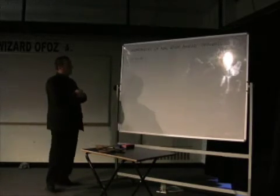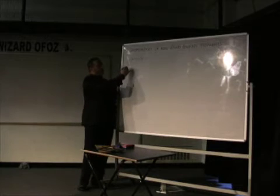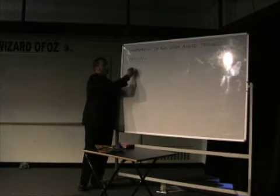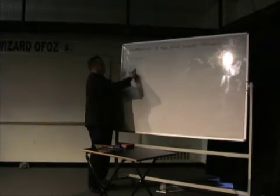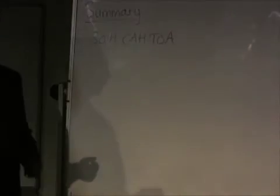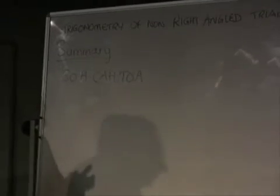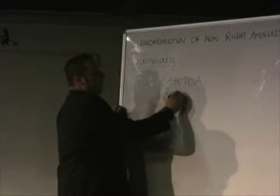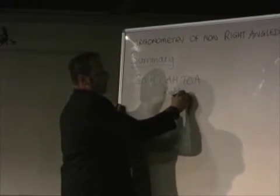At the beginning of the lesson, you started off by knowing SOHCAHTOA, which is applied to right angle triangles. You were at a stage where you knew the three ratios to apply to right angle triangles and apply that to find missing sides and missing angles.